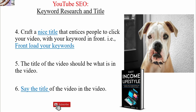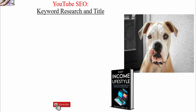Point number six on how to do YouTube SEO: say the title of the video in the video. If the title is 'best cameras for YouTube videos,' start your video with that sentence. When I started this video, I mentioned something very similar to my title as the first line. You always want to say the title of your video as the first line in your video. If you're getting value out of this content, please subscribe to this YouTube channel and type a '1' in the comments after you've subscribed and I'll surely reply.